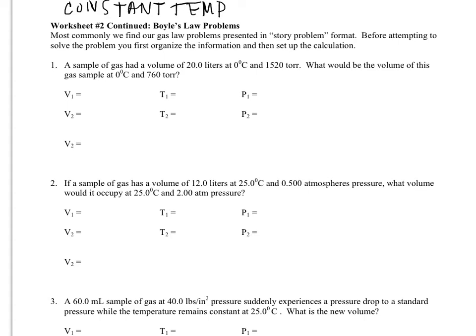Meaning that the temperature we start with and the temperature we end with are the same. And when we have a constant temperature, what Boyle's law tells us is that volume and pressure are inversely related or inversely proportional.